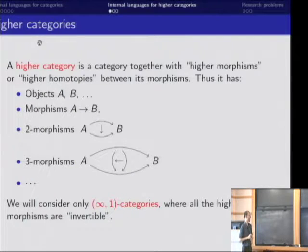What is a higher category? Well, you might have heard of them before. They're getting a lot of press nowadays. A higher category is a category together with higher morphisms. Morphisms are homotopies that relate its morphisms. So in addition to morphisms between objects, we have morphisms between morphisms, morphisms between morphisms between morphisms, and so on.